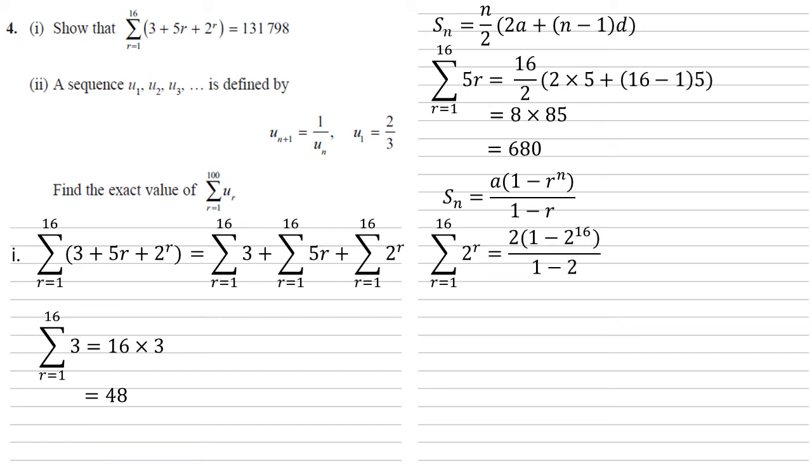Using our formula gives us 2 times 1 minus 2 to the power of 16, all over 1 minus 2, which is 2 times minus 65,535, all over minus 1, which is 131,070.